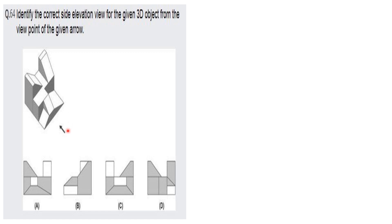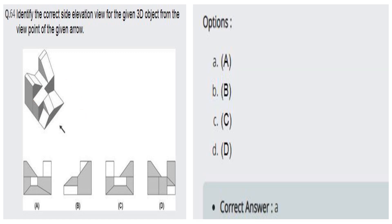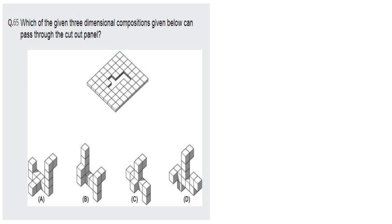For the next 3D object question, we identify the view along the arrow direction. The base shows a gray color on the left, three colors on the right, and a small white square visible in the middle. At the top there is a gray color, and white is seen on the right side. Options B, C, and D are not suitable for this object. Option A correctly represents this view, so option A is the right answer.